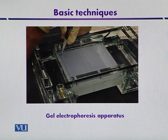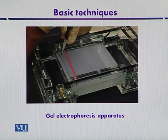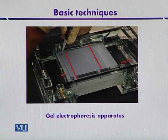This is the gel electrophoresis apparatus. The gel is divided into two parts and is placed in a reservoir containing the buffer. DNA samples can be loaded into the wells. As DNA has a predominantly negative charge, it will move from the negative electrode towards the positive electrode. This is the direction of movement of the DNA molecule under an electric current.